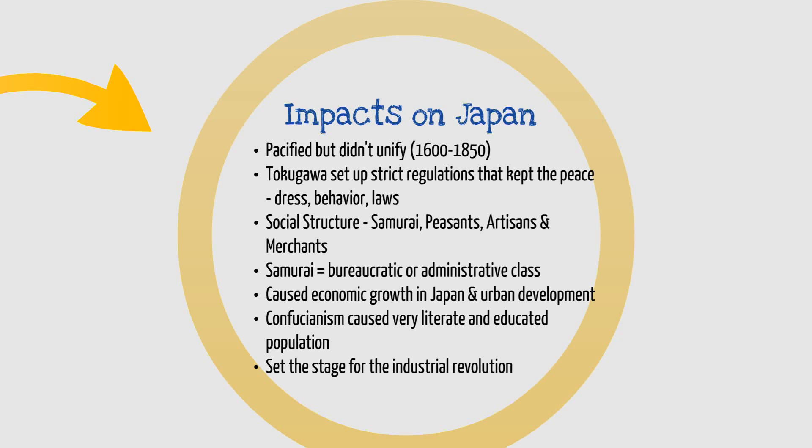It also caused a lot of economic growth in Japan, which might seem strange at first since they weren't really trading with other people. But they were moving away from being a rural population to more of an urban population, so there was a lot of urban development as the daimyo were living in cities. This really set the stage for the Industrial Revolution. And because Confucianism was still a large influence within Japan, they had a very literate and educated population. Combine all those things together, and they were really ripe for the Industrial Revolution in the next period.